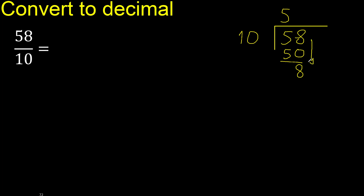There is no number that goes down further, therefore complete — always complete with 0. Here, point. 80: 10 multiplied by which number? Multiplied by 9 is 90, which is greater. Multiplied by 8 is 80.